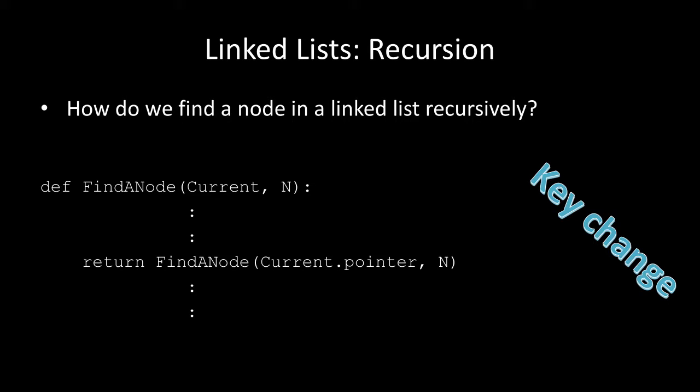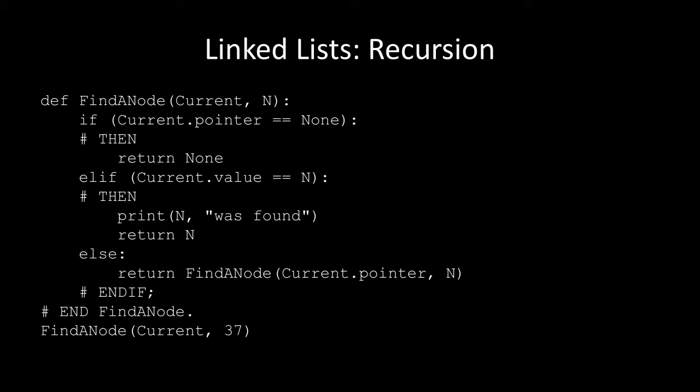If we want to find a node in a linked list recursively, find_node has to take in two parameters: the pointer starting at the head, and the value we're looking for. All we do is recall the method each time — find_node with the next element of the list — keep going until we've found the value we want. If current points to None, return nothing. If current.value equals the value we're looking for, we've found it. Otherwise, call the same method with the next node, the next node, the next node — comparing the node value to n without having to use a loop.